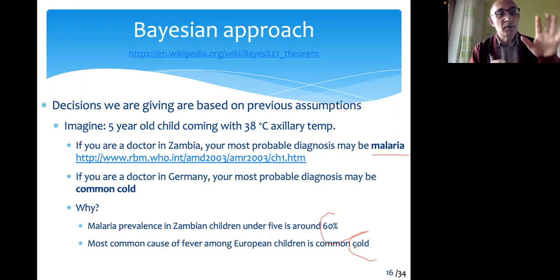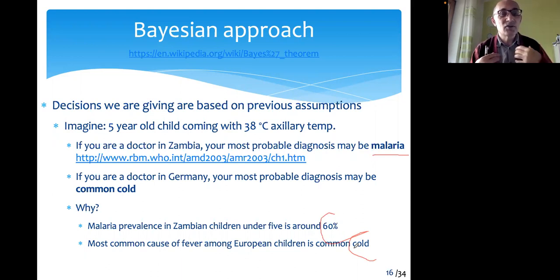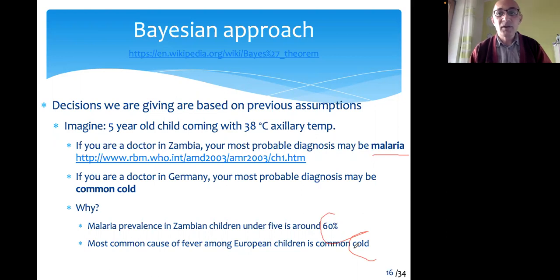The pretest probability in Zambia tells us this might be malaria, whereas in Germany the pretest probability of malaria is very low, and high fever will tell us nothing about malaria.